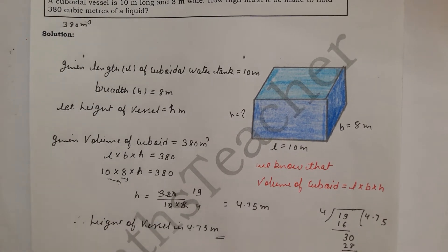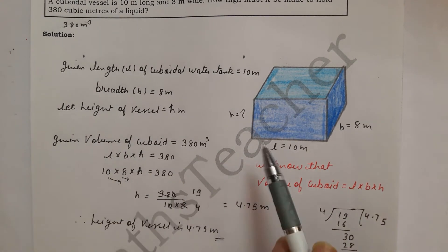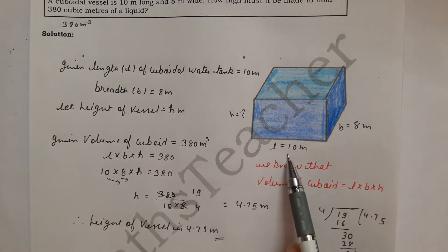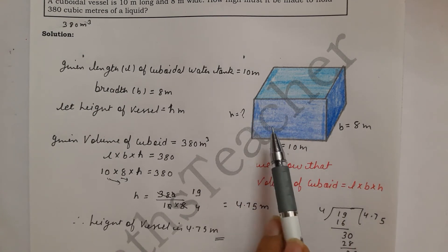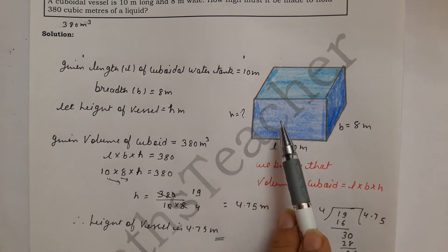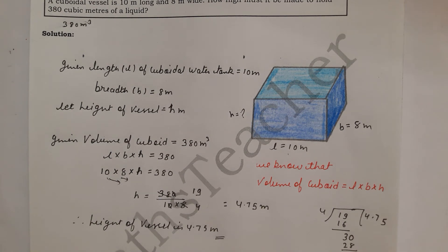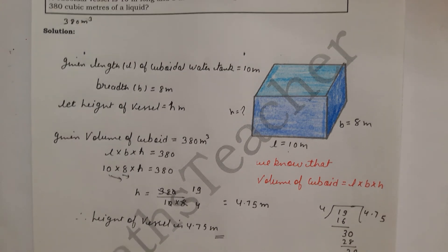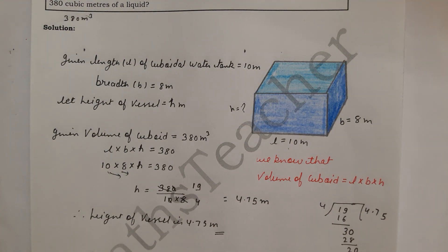So this is a different type of question where you are not asked to find the volume, but rather to find a missing dimension. In the exam, if you have to find length, breadth, or height when volume is given, you solve it using this method. If you have any doubts, please comment in the box. Thank you.